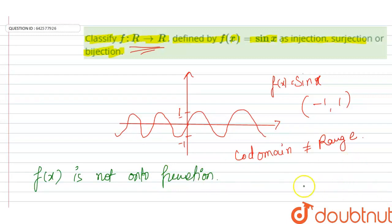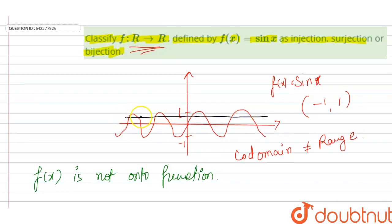Now we check for the one-one function. For a one-one function, if we draw a line parallel to the x-axis, we can see that this line parallel to the x-axis cuts the graph at many points — different points at different intervals.